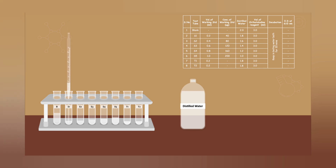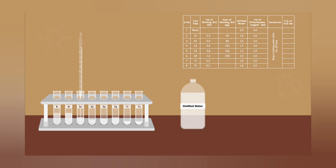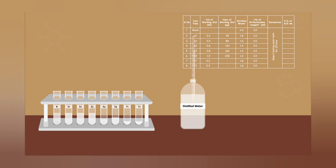The test tubes are placed in a water bath at 100 degrees centigrade for exactly 12 minutes. After the reaction, the tubes are removed and allowed to cool in a beaker of cold water for about five minutes. The colour produced is then measured in a spectrophotometer at 630 nm wavelength.